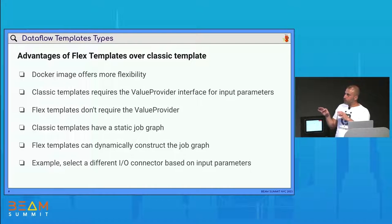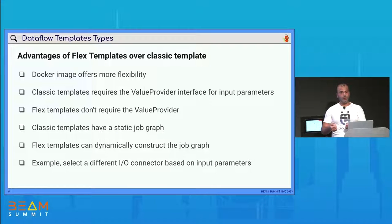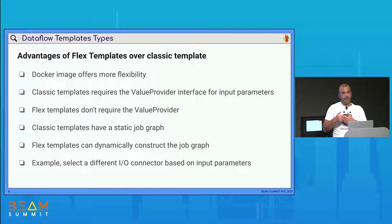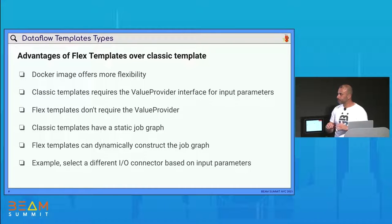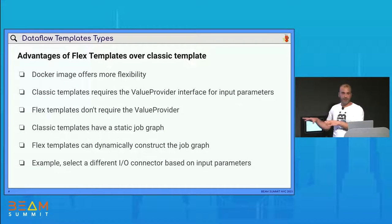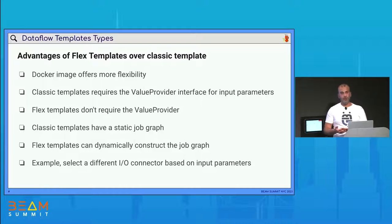Talking about the advantages of Flex Template over Classical template: a Docker image offers more flexibility because we can install almost everything in a Docker container. Classical templates require a value provider for input parameters, and some IOs are not compatible with value provider. With Flex Template, no need to go through value provider — every IO is compatible. Also, Classical templates have a static graph for the job, but Flex Template can have a dynamic graph. We can change the input connector from input parameters, which offers more flexibility.